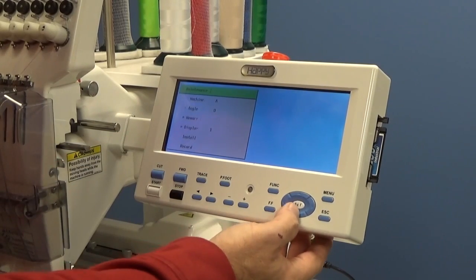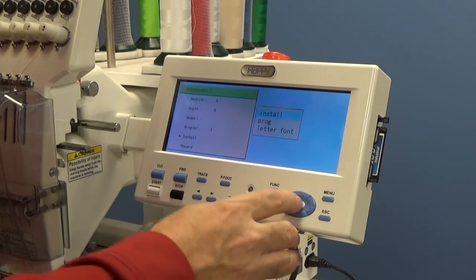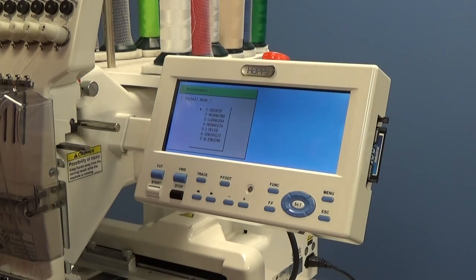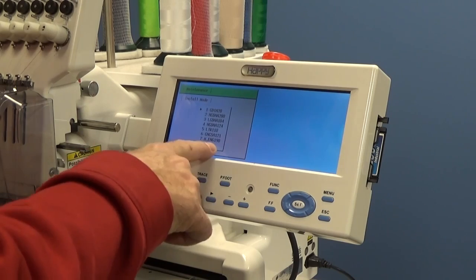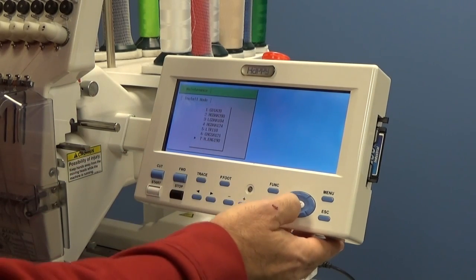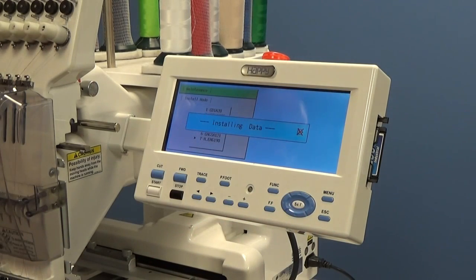Then we're going to go down to install. We're going to press install on the right side. Then we're going to see the list of firmware updates. I have several on my card, but the first one we're going to do is the H English 190. Press set.